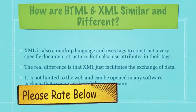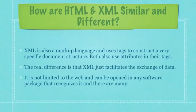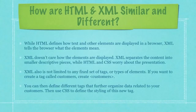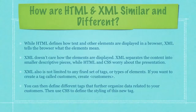So what makes HTML and XML similar as well as different? XML is also a markup language and uses tags to construct a very specific document structure. Both also use attributes in their tags. The real difference is that XML just facilitates the exchange of data. It is not limited to the web and can be opened in any software package that recognizes it, and there are many. While HTML defines how text and other elements are displayed in a browser, XML tells the browser what elements mean. XML doesn't care how the elements are displayed. XML also is not limited to any fixed set of tags or types of elements. If you want to create a tag called customers, just create a customer tag.